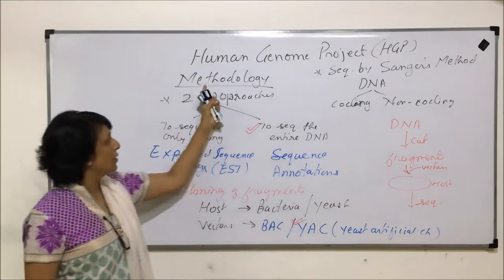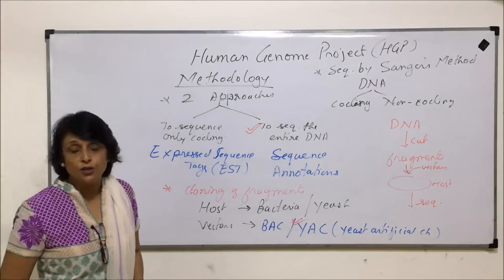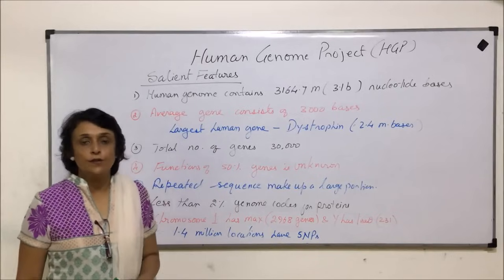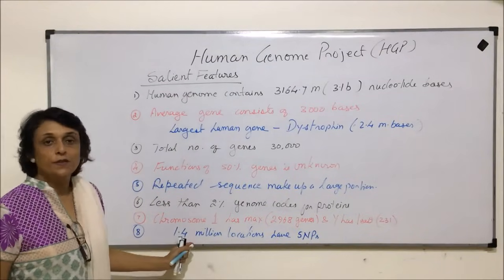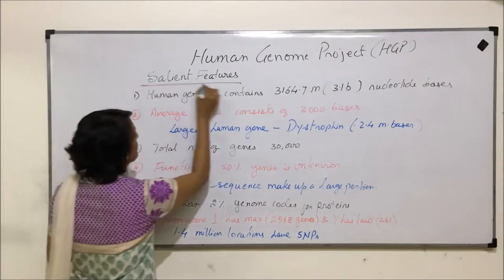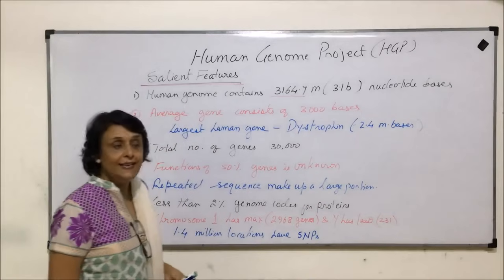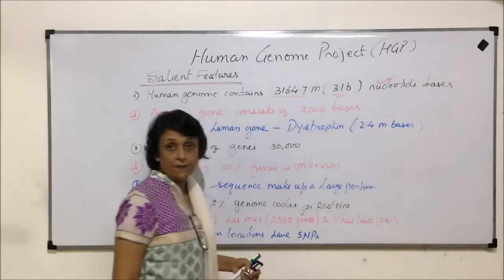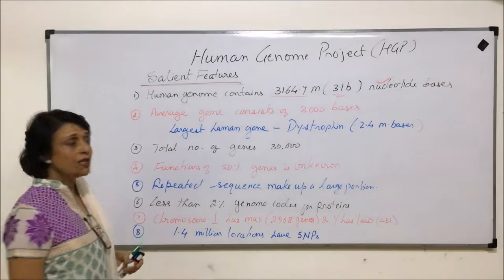So from the entire genome they isolated complete DNA — coding as well as non-coding — cut it into fragments, cloned them in bacterial or yeast cells using BAC and YAC vectors, and sequenced using Sanger's method. This is the rDNA technology. This completes the methodology. Now let us talk about the salient features of the Human Genome Project — what was found after the project was completed.